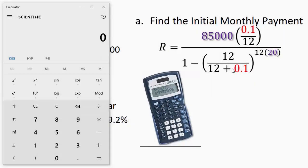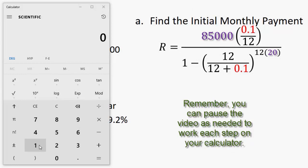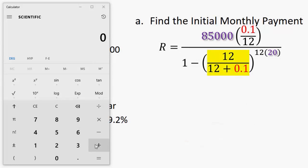What I'm going to do first is working inside the innermost parentheses in the denominator. I'm going to go ahead and add the 12 plus 0.1 in my head. That's 12.1. That's one less set of parentheses I need to worry about. So 12 divided by 12.1 equals, I need to raise this number, that's the value in parentheses, to the power of 12 times 20. That's 240.